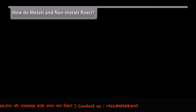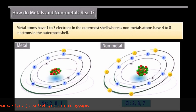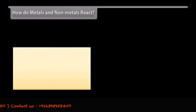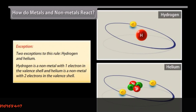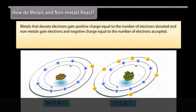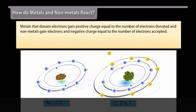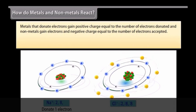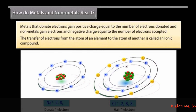How do metals and non-metals react? Metal atoms have 1 to 3 electrons in the outermost shell, whereas non-metal atoms have 4 to 8 electrons in the outermost shell. Two exceptions to this rule are hydrogen and helium. Metals donate electrons and gain a positive charge, while non-metals gain electrons and a negative charge. When a metal atom donates 1, 2, or 3 electrons from its valence shell to a non-metal atom that has the ability to accept these electrons, it is known as electrovalency. As a result, both atoms form the structure of an inert gas. The transfer of electrons from the atom of one element to the atom of another is called an ionic compound.